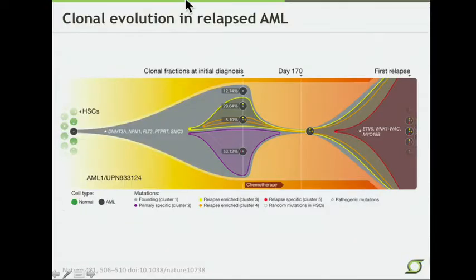Last year, we were able to view this in action in a case of relapsed AML where we sequenced both an AML tumor, a match normal, and a relapse, and using that, we were able to put together a model of exactly how this clonal evolution works, at least in this case.